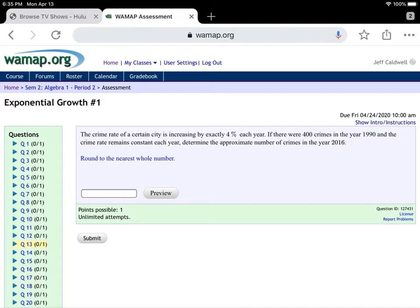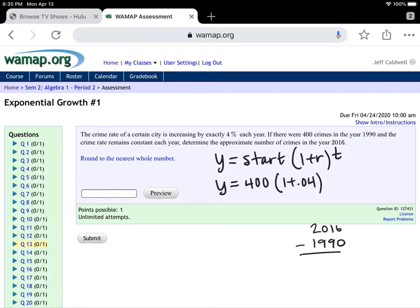In this question we're using the formula that I went over in the original video, which is y equals start times 1 plus r to the power of t. So in this case you're starting with 400. There are 400 crimes. It's increasing by 4%, 1 plus 0.04, which again you could write as 1.04. You do have to figure out the time. 1990 to 2016, subtract the years.